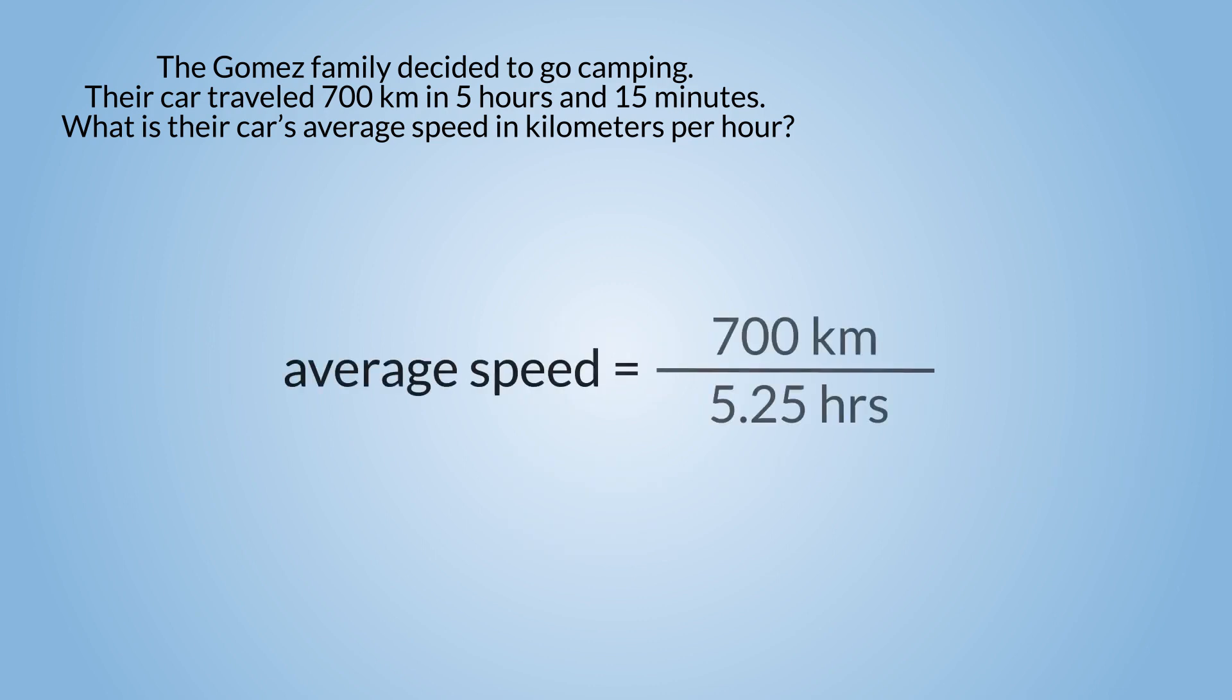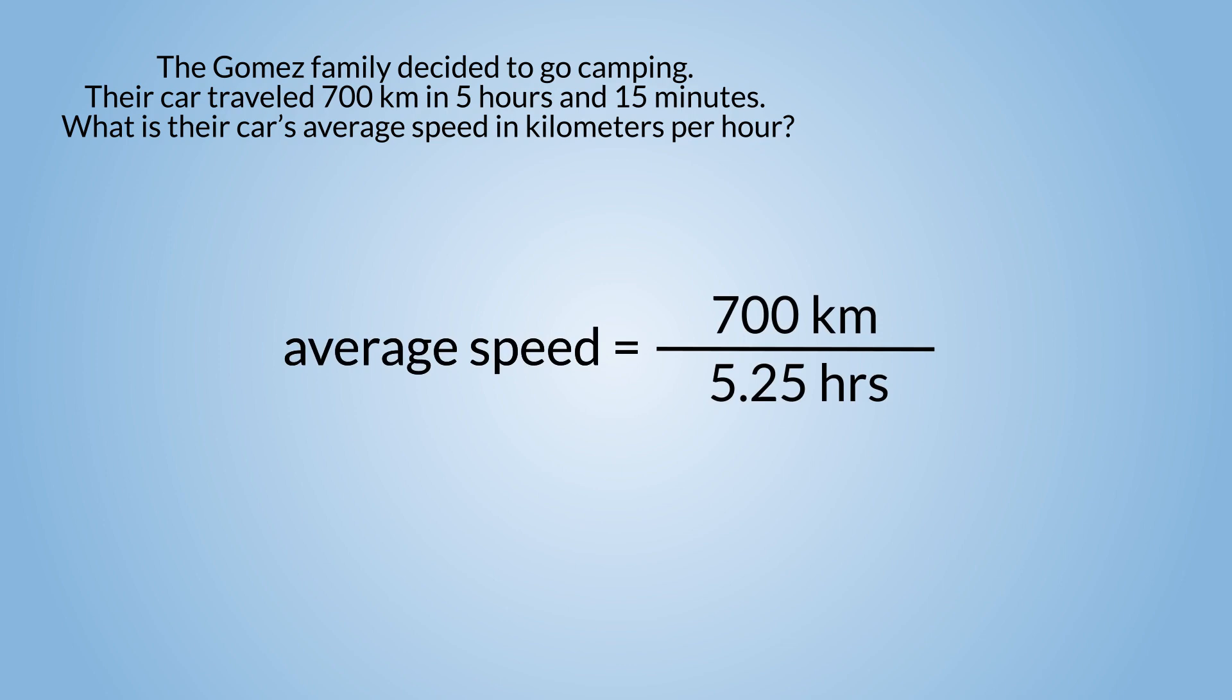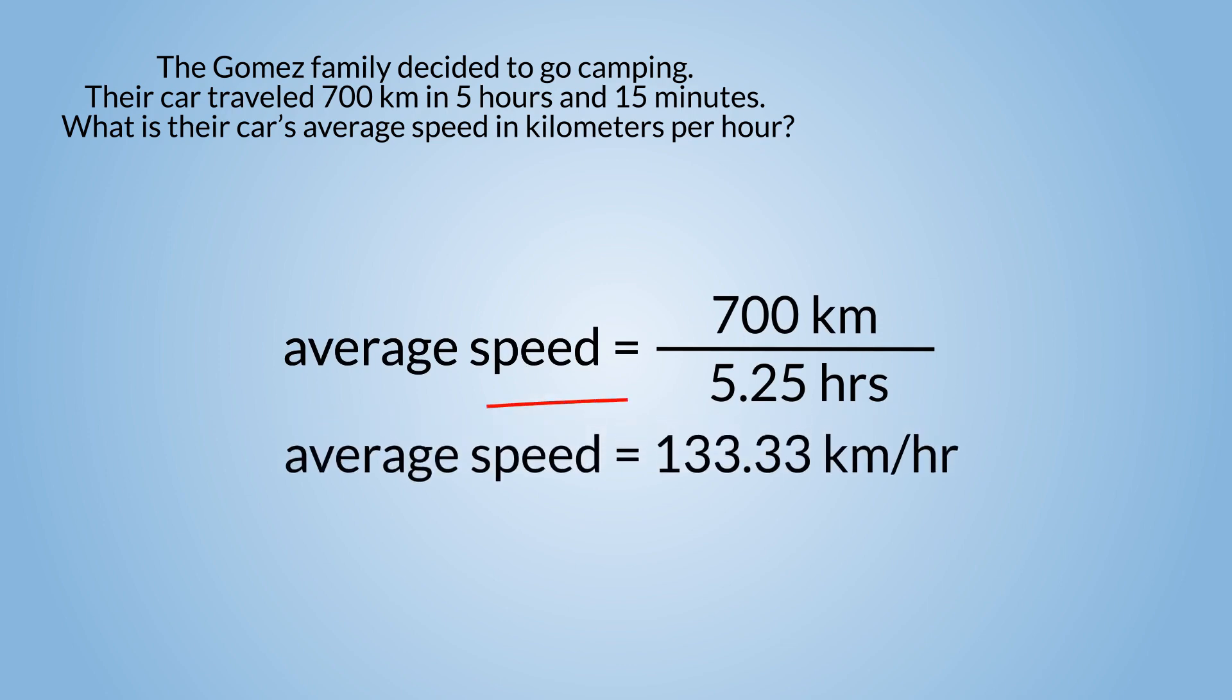Now that we are all set, we can finally solve for the average speed. The average speed of the Gomez family's car is 133.33 kilometers per hour.